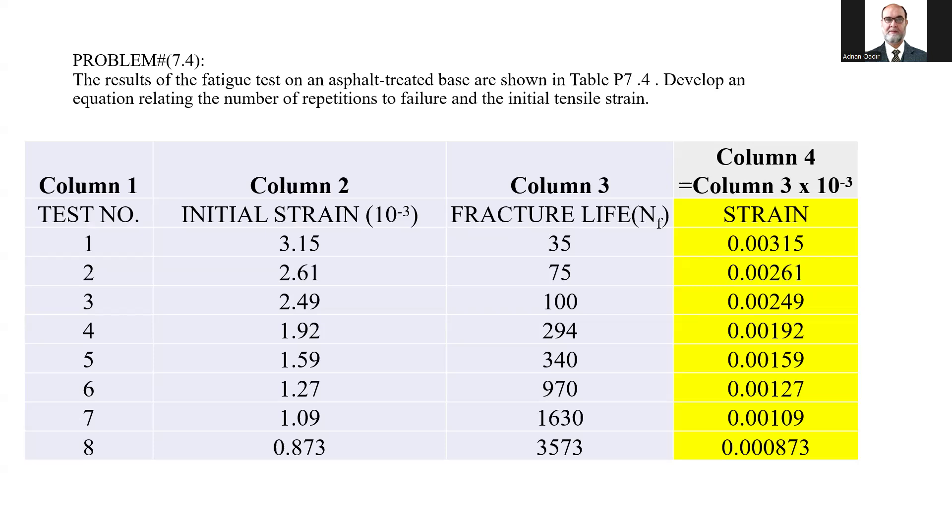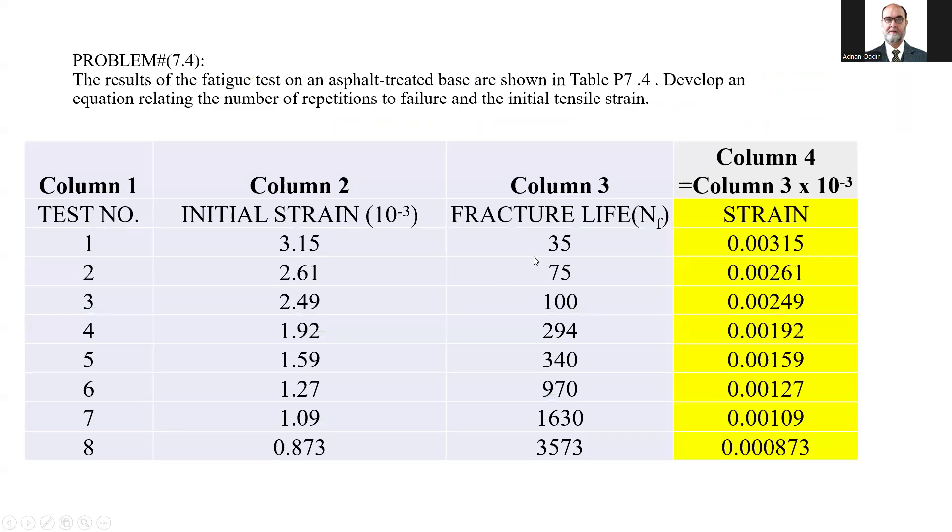This is column two multiplied by 10 power minus three. So 3.15 multiplied by 10 power minus three becomes 0.00315, or 0.873 becomes 0.00873. What we need to do is use a logarithmic graph in which there is number of repetitions to failure Nf versus strain inch per inch.